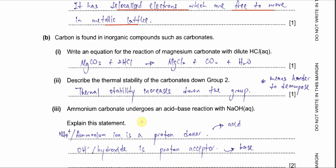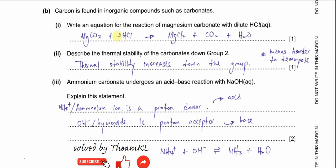Part B. Carbon is found in inorganic compounds such as carbonate. Part one: write an equation for the reaction of magnesium carbonate with hydrochloric acid. A carbonate salt reacting with acid will form another salt, plus CO₂ and H₂O. So magnesium carbonate reacts with HCl to form magnesium chloride — the salt produced — along with CO₂ gas and H₂O.